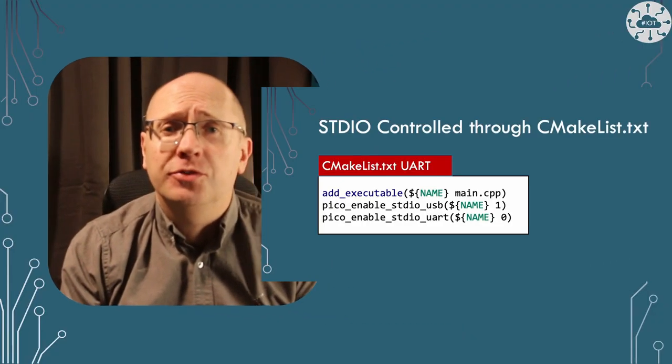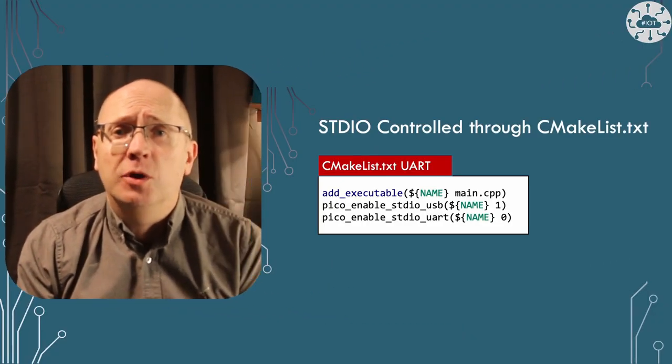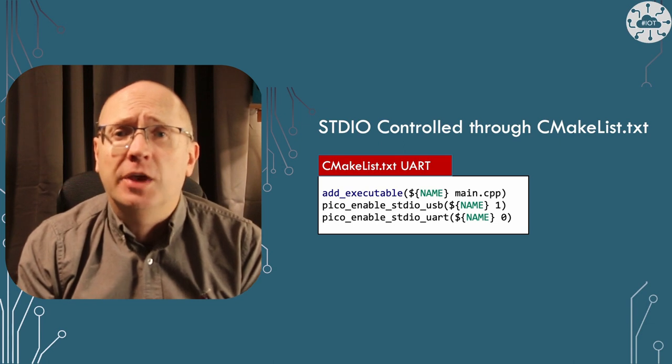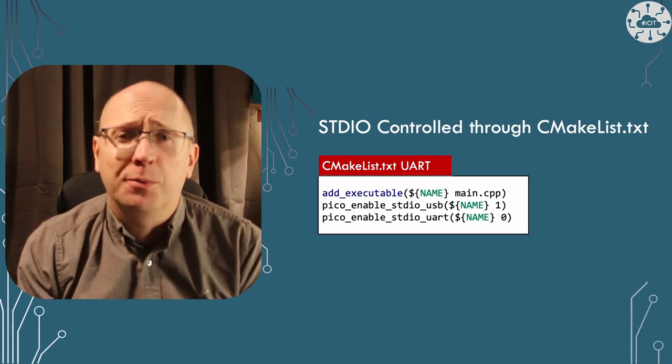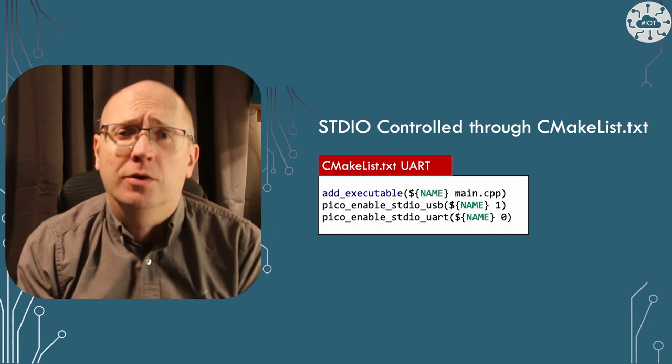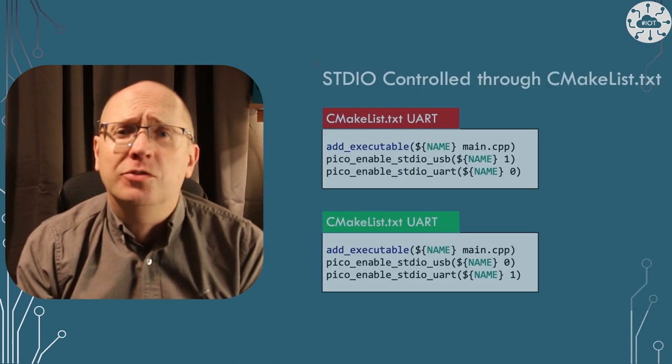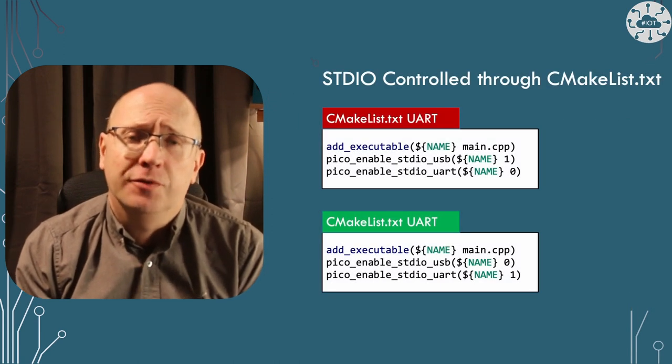If you're like me, you probably started using the Raspberry Pi Pico putting standard IO over USB. The first examples did this, and then we copied it — so we had a configuration of CMake that looked like that. To take advantage of the Raspberry Pi debug probe, I want to move standard IO over UART, which is a simple change to the CMake file.